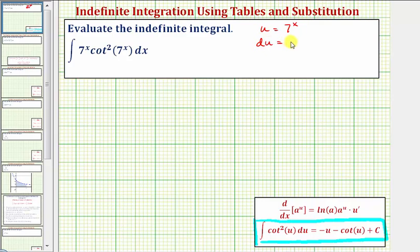Differential u equals the derivative of seven raised to the power of x with respect to x times dx. Here's our derivative formula in case we need the review. Notice in this case, this includes the chain rule, which we don't need here because u would equal x and therefore u prime would just be one. So differential u equals natural log seven times seven raised to the power of x times dx.